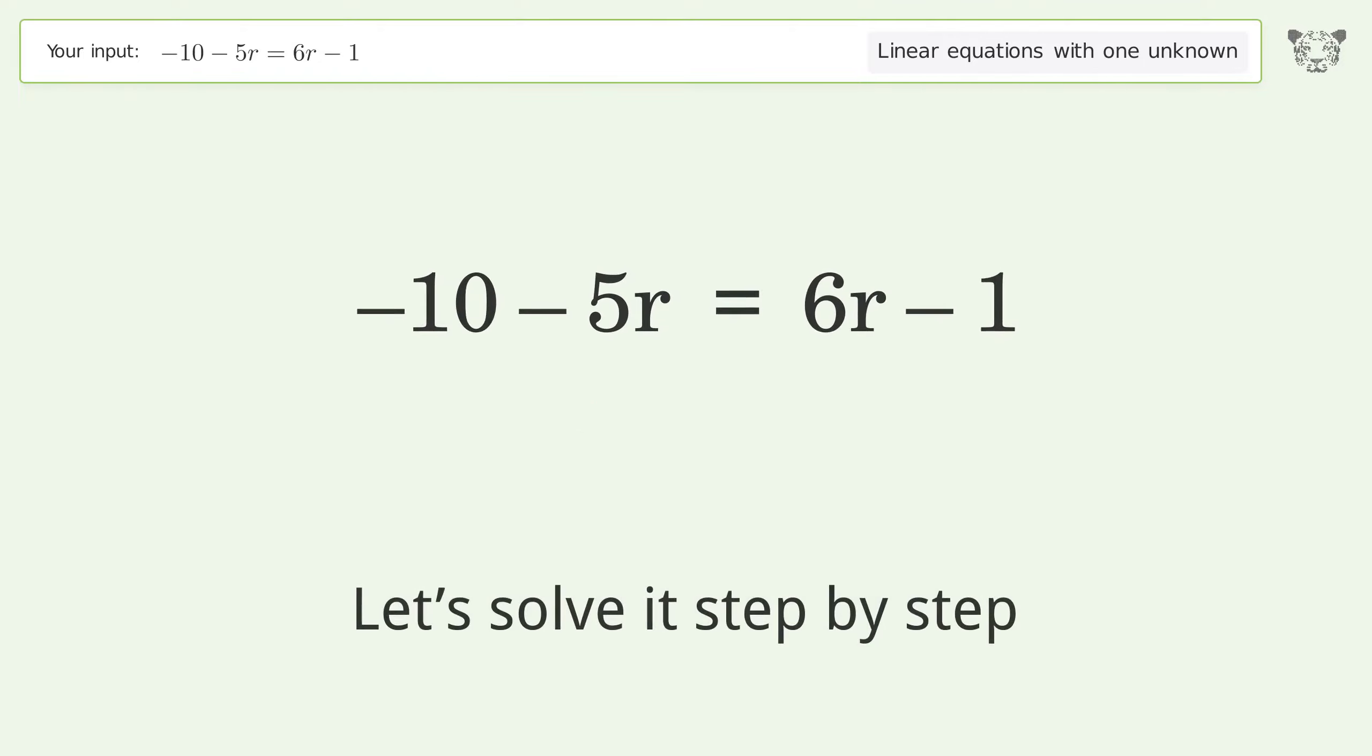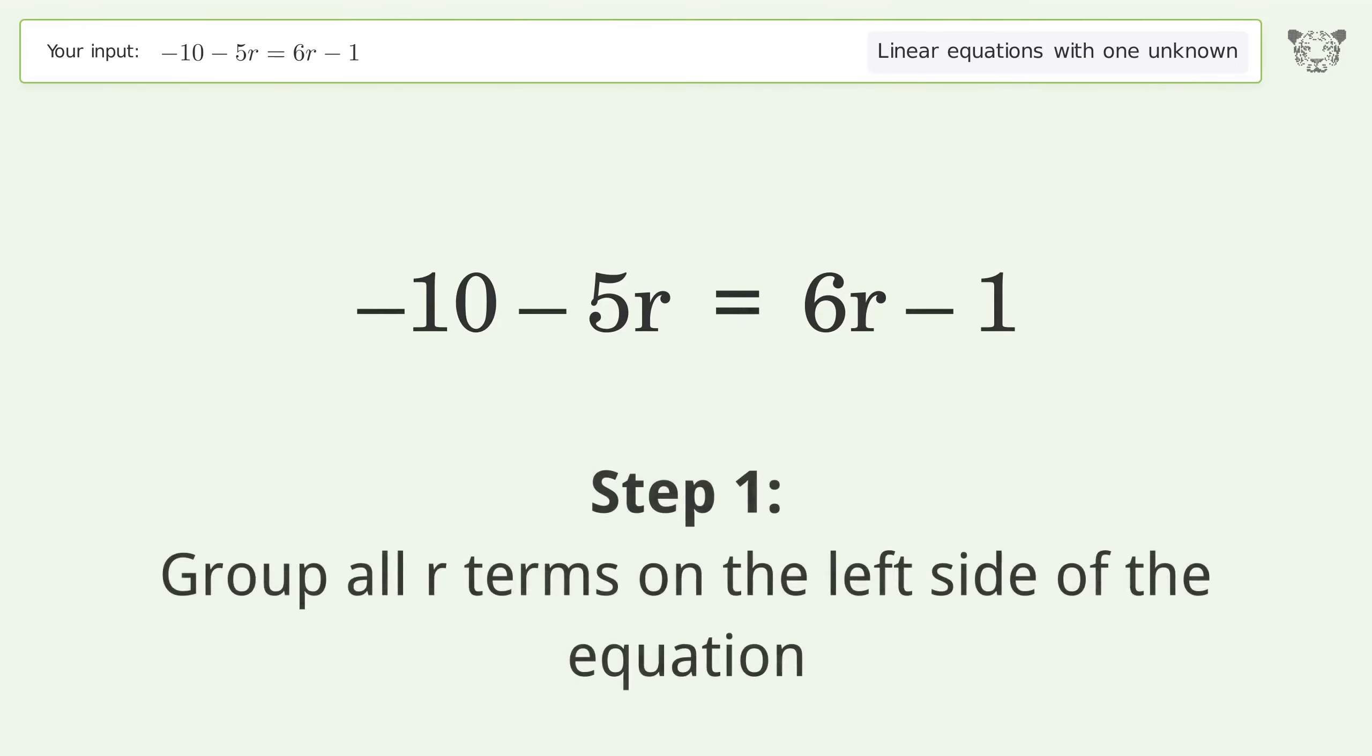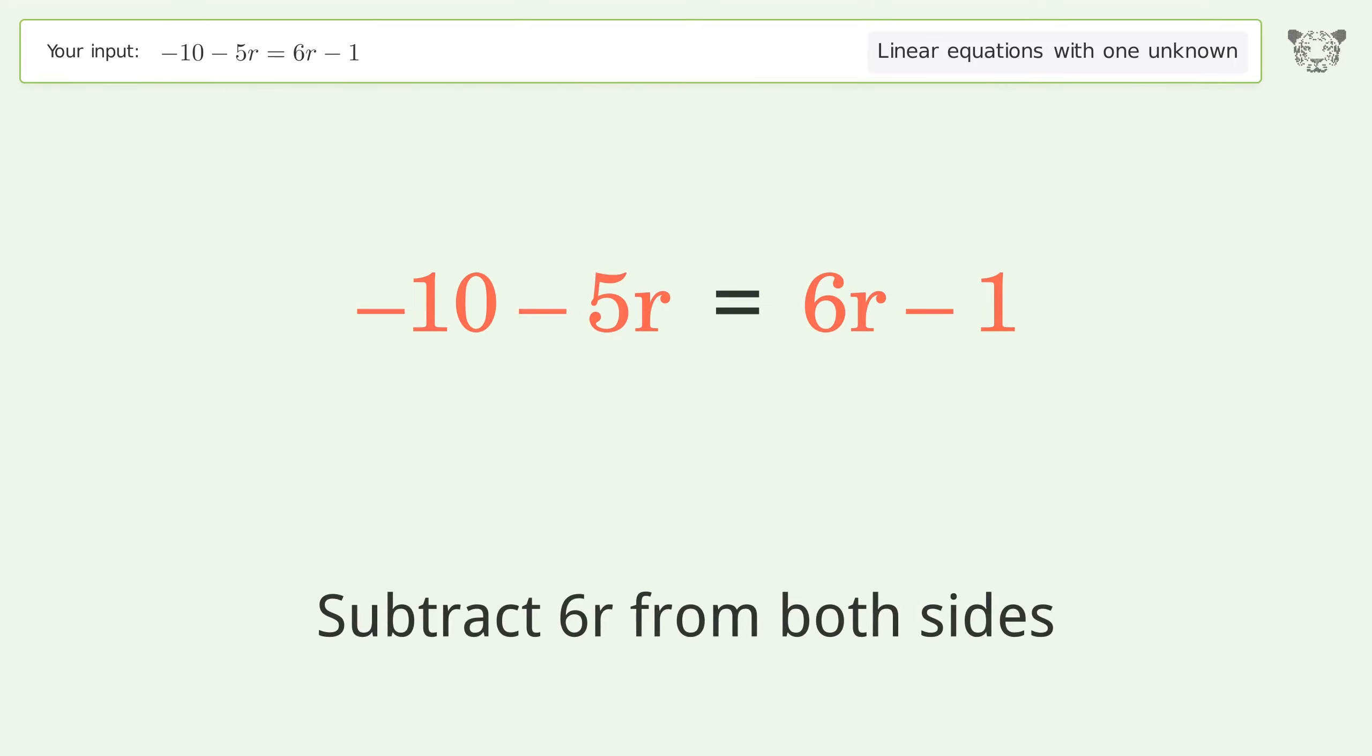Let's solve it step by step. Group all r terms on the left side of the equation. Subtract 6r from both sides.